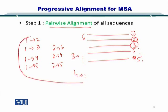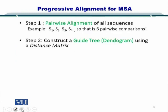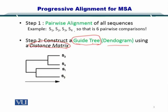Once you have these combinations of alignment, you are ready to move to the second step. In the second step, you construct a guide tree, or simply a dendrogram, using a distance matrix. Here you need to understand what a distance matrix and a guide tree are. For instance, this is a dendrogram or guide tree for four sequences: S1, S2, S3, and S4.